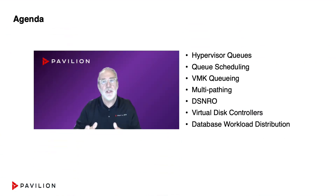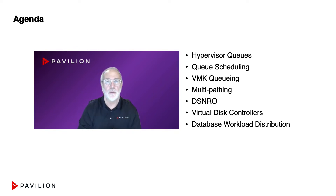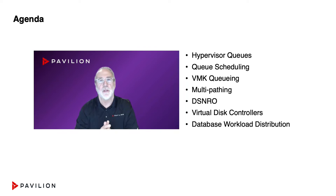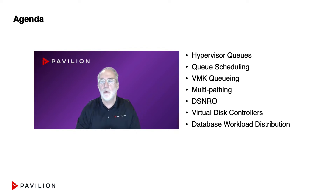This video is going to focus on storage queues and how to tune them for fast storage, because the default is for slow storage — fast storage like NVMe storage like Pavilion's hyperparallel flash array. We're going to focus on hypervisor queues, queue scheduling, VMK queuing, multipathing, DSNRO, as well as virtual disk controllers and database workload distribution.